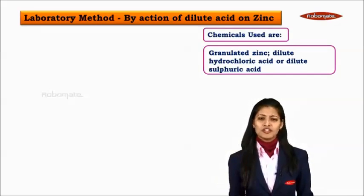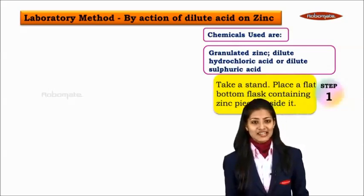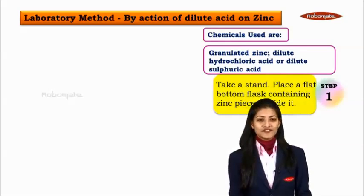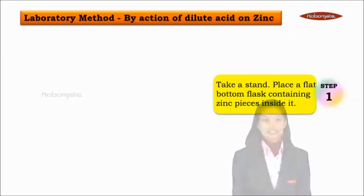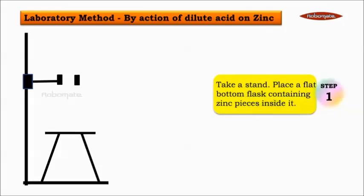Step one that we are following is, take a stand, place a flat bottom flask containing zinc granules inside it. So this is a stand for us. We are going to attach a round bottom flask inside which we are adding granulated zinc.